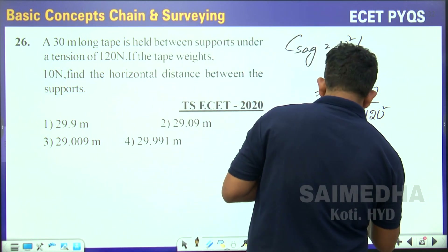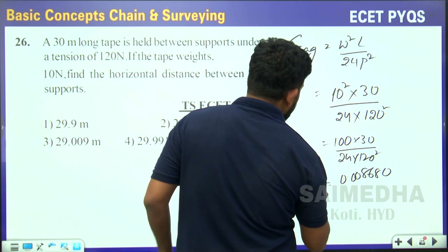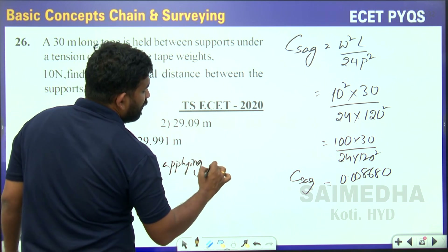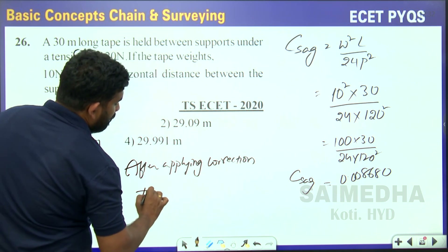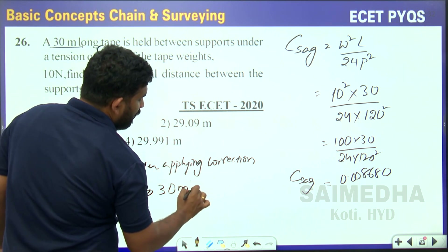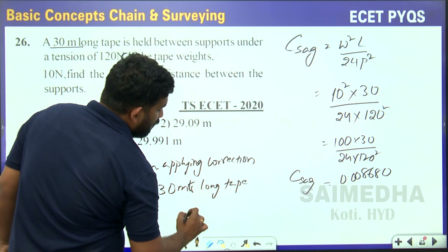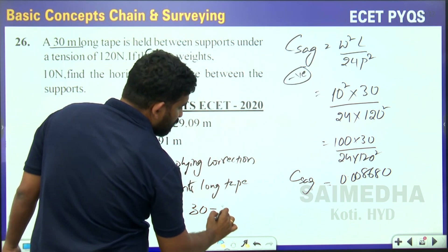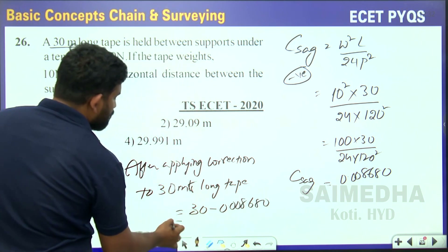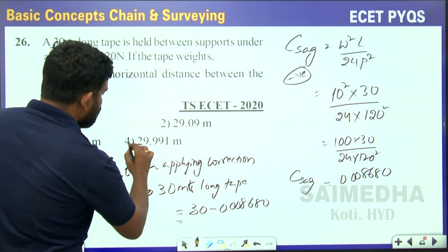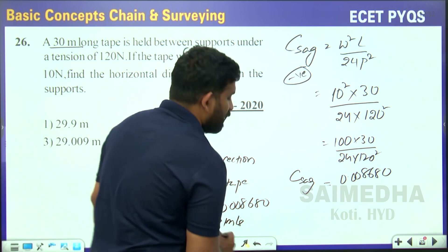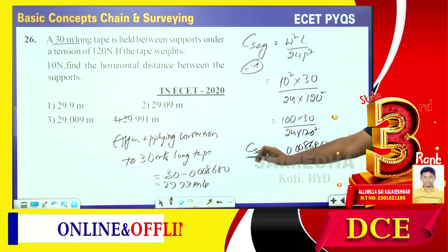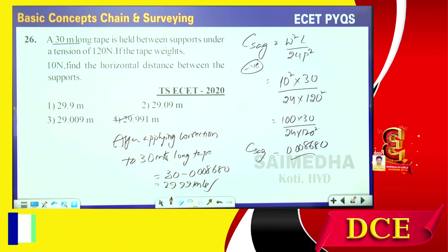The correction comes out to be 0.00868 meters. The sag correction is always negative, so after applying it to the 30-meter tape: horizontal distance = 30 − 0.00868 = 29.991 meters. The key point is that the correction for sag is always negative, so we subtract this from the tape length to get the correct horizontal distance of 29.991 meters.